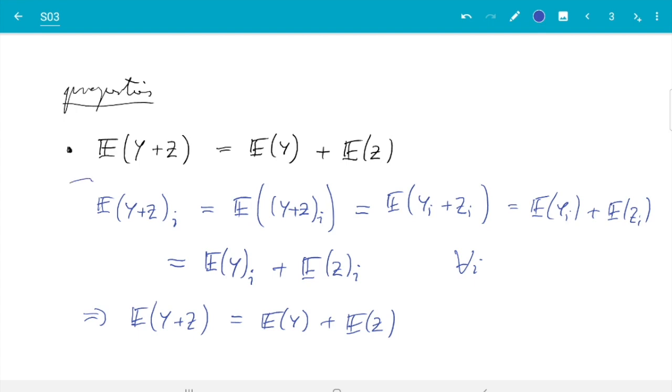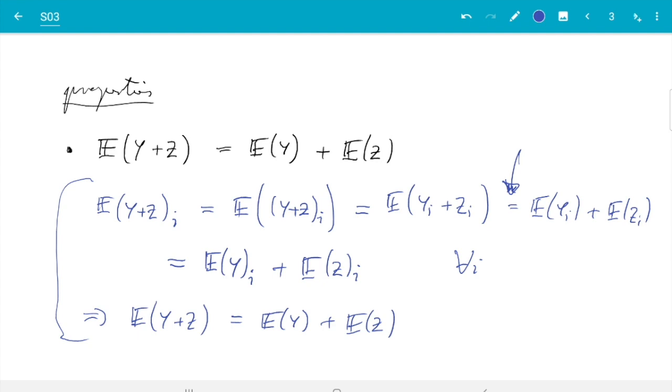So let me just write a few more rules. For example if a is a number then expectation a times z is a times expectation of z and the proof here is very similar to what we just did only a bit easier.